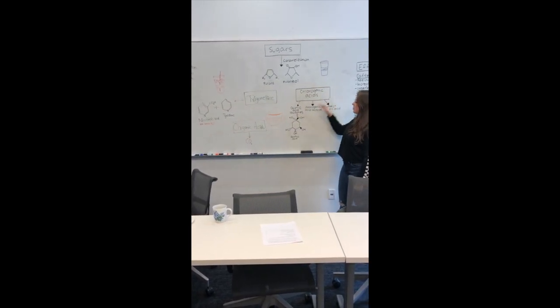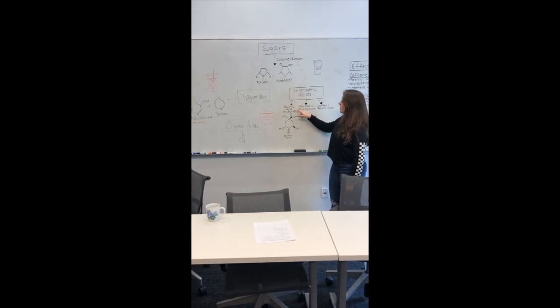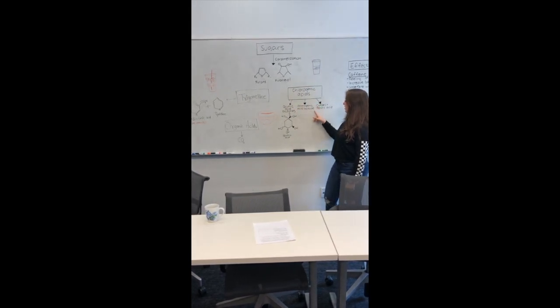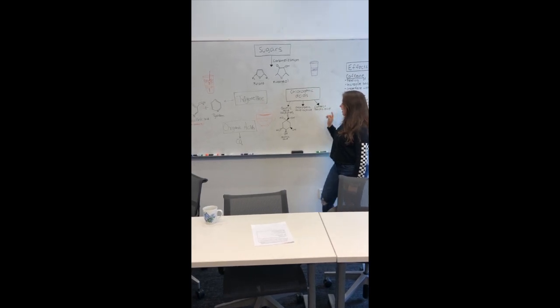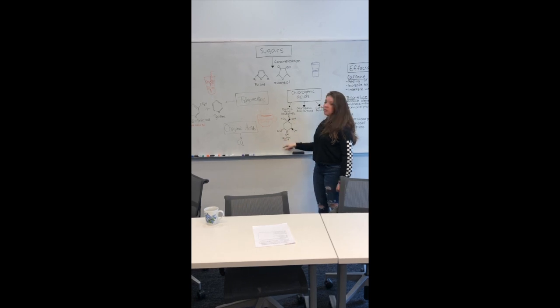Chlorogenic acids break down into these three lactones. So, quinic acid lactone, chlorogenic acid lactone. And, as you can see here, this is what quinic acid looks like.